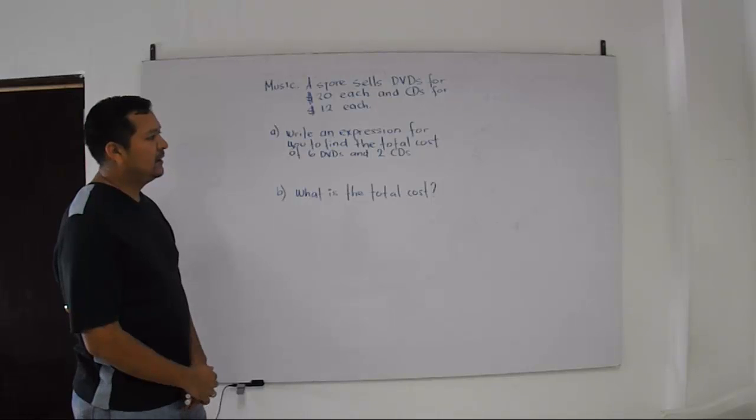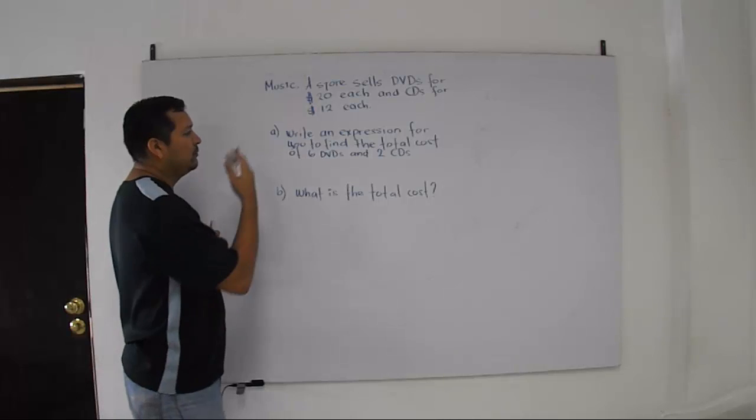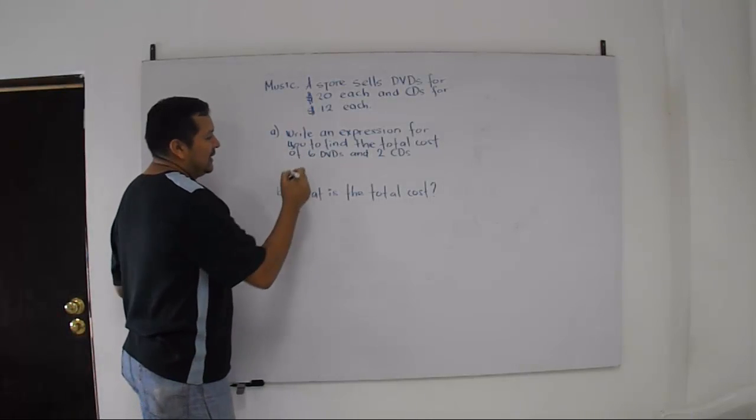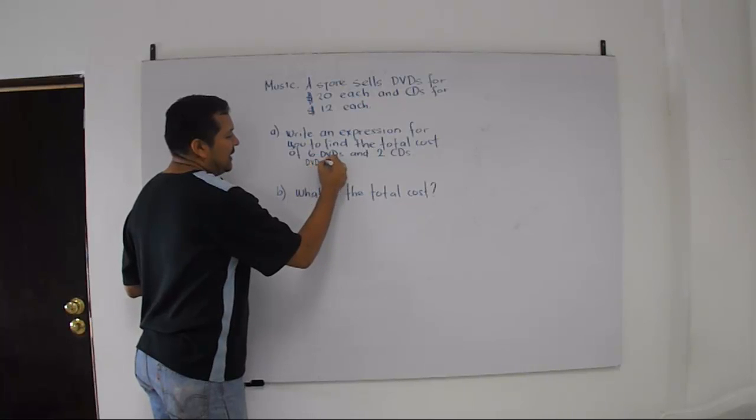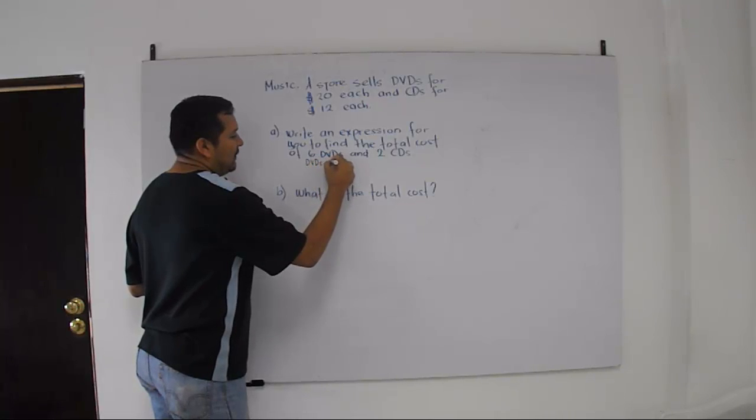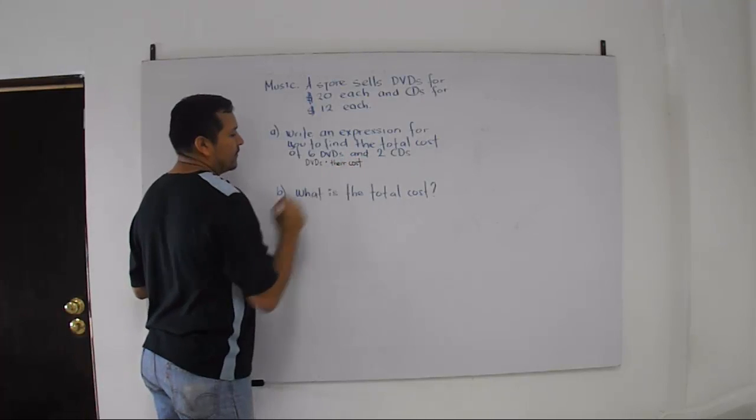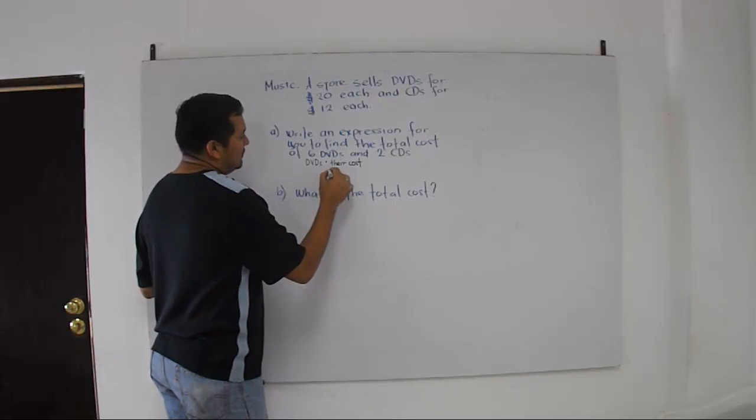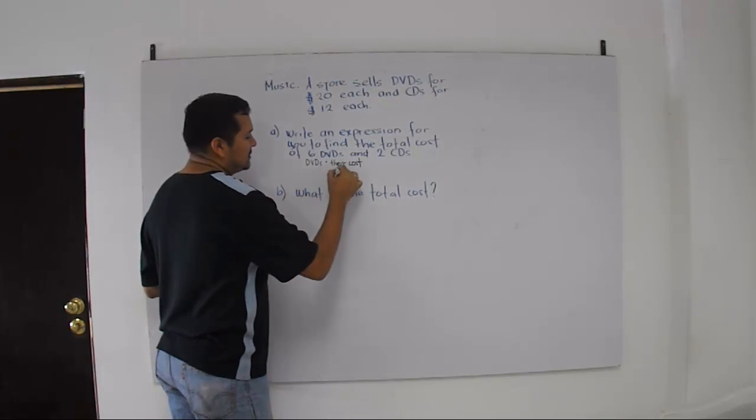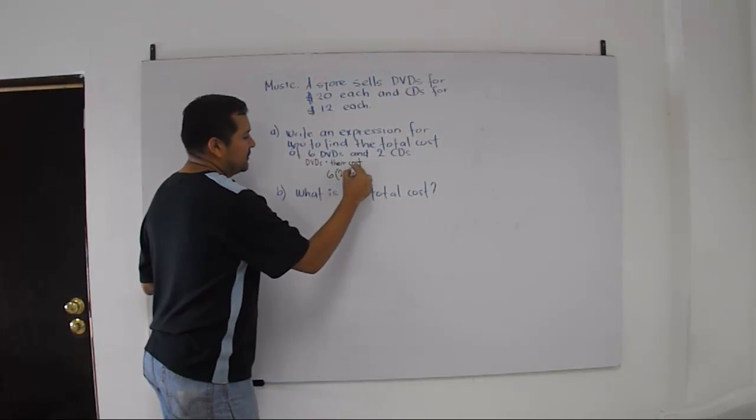Okay. We're going to use the order of operations and we know that we need to multiply the DVDs times their cost. That is 6 DVDs times $20.